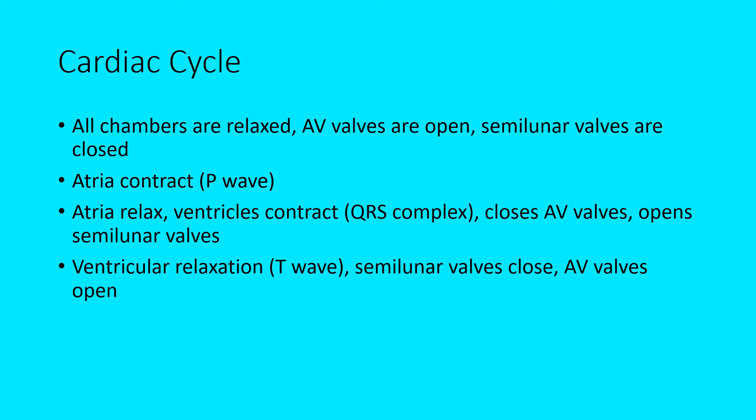Then the atria are going to contract. We're going to be looking at the cardiac cycle in terms of when the chambers are contracting versus relaxing, correlating that to when the various valves are open versus closed, and comparing all that to an EKG to see what the different peaks and valleys mean. When the atriums contract, that's what on an EKG you look at as the P wave.